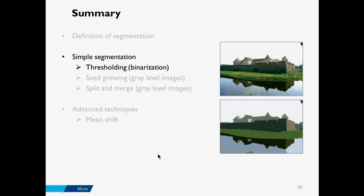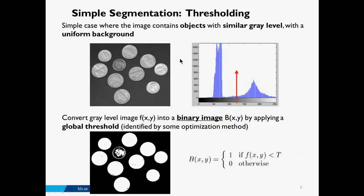Let's move to the first simple segmentation technique: thresholding. Thresholding is a simple case of segmentation where the image contains objects with similar gray levels that can be clearly distinguished from a uniform background. If we plot the histogram of this image, we can see a region corresponding to dark pixels of the background and another region corresponding to bright pixels of the coins. We can place a threshold in between to separate the objects of interest from the background.